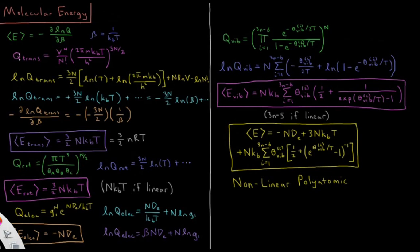Starting off with translations, our translational partition function is equal to V to the n over n factorial, times (2π m k_B T / h²) to the power 3n/2. Here V is the volume accessible to the particles, n is the number of particles, m is the mass of an individual particle, k_B is the Boltzmann constant, T is temperature, and h is Planck's constant.